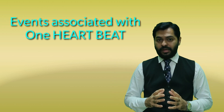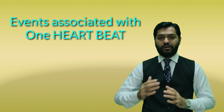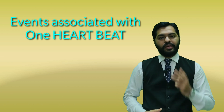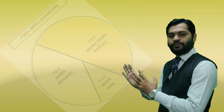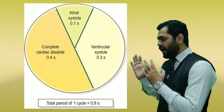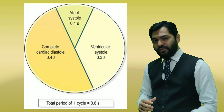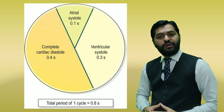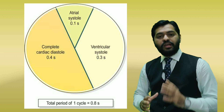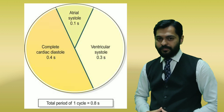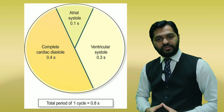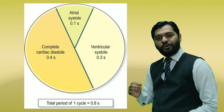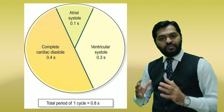The cardiac cycle refers to all the events associated with one heartbeat. When one heartbeat completes, it involves rhythmic contraction and relaxation. There are three major events: the first is atrial systole, which lasts for 0.1 seconds. The next event is ventricular systole, which lasts for 0.3 seconds.